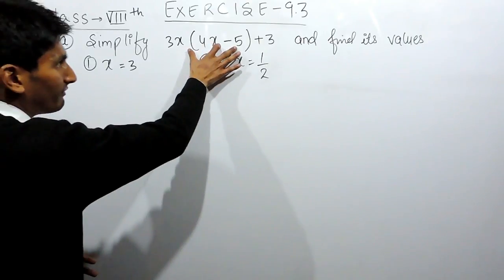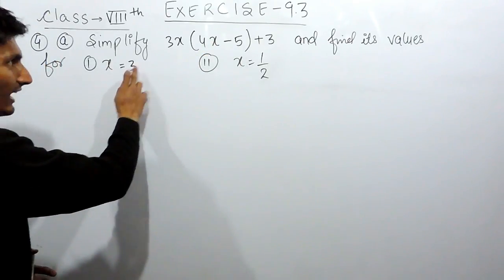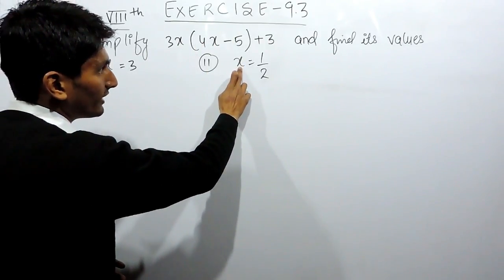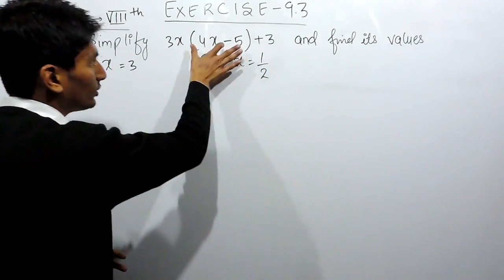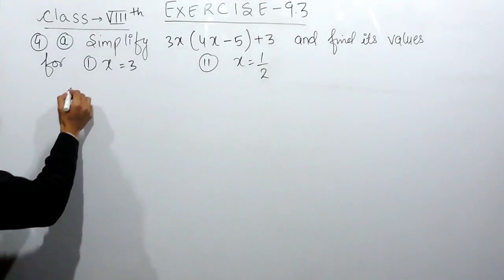After simplifying this, you have to substitute the value of x as 3, then you have to calculate the value of this expression. After that you have to substitute the value of x as 1 by 2, then you have to find the value of this expression. Now, let's first of all simplify this.